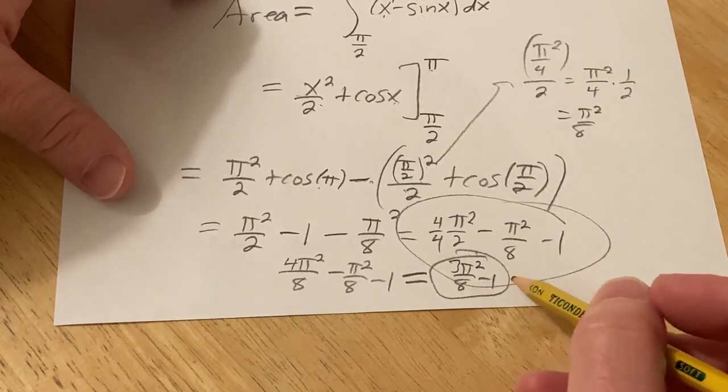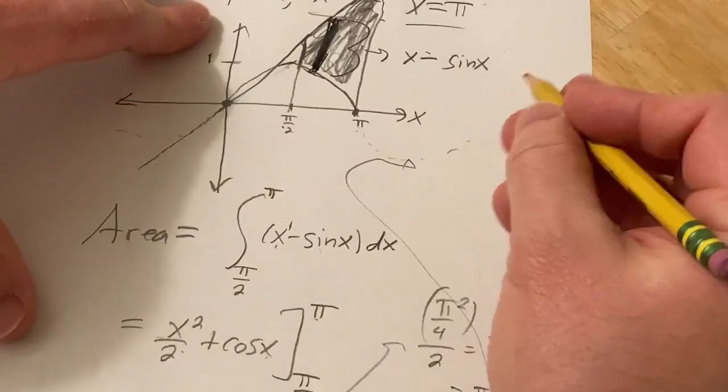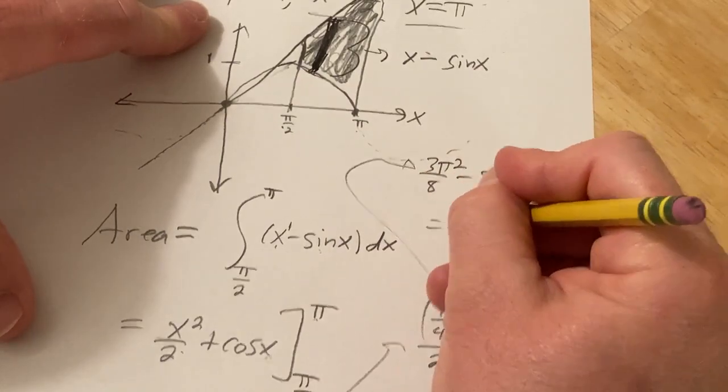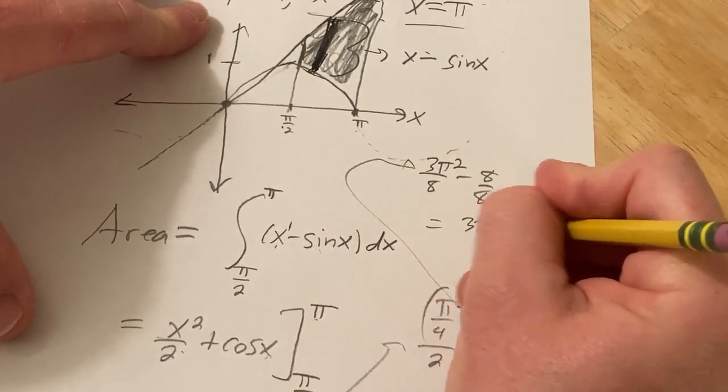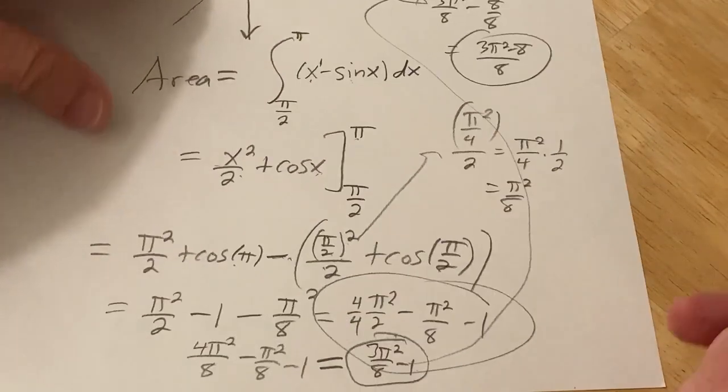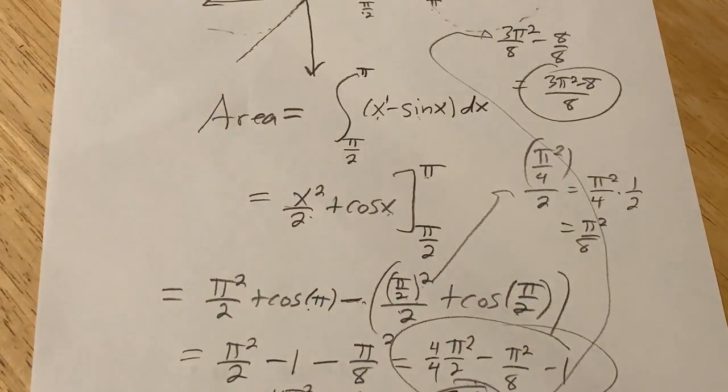And if you really wanted to combine this even further, you could write it as 8 over 8. So it would be 3 pi squared over 8 minus 8 over 8. So you can write it as 3 pi squared minus 8 over 8. Just show you a couple different ways to write the answer. I think it's good to become comfortable with all of them so you get better with your math skills. Good luck.